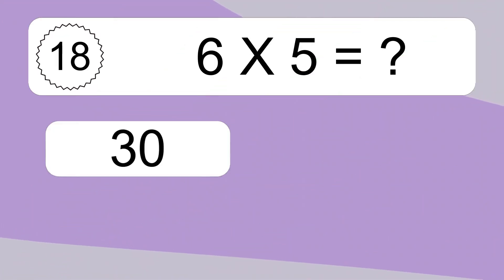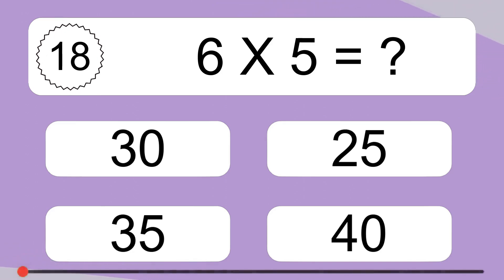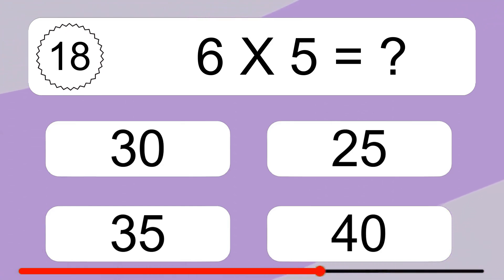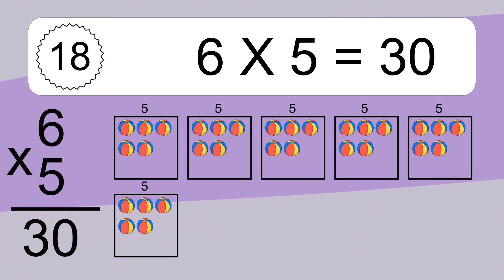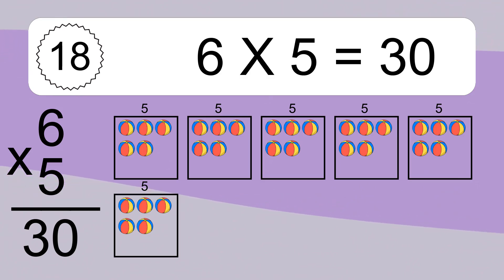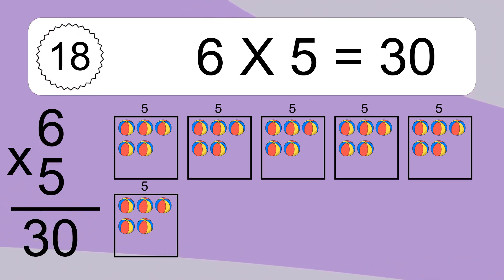6 times 5 equals what? 6 times 5 equals 30. We have 6 boxes, and each box has 5 colorful balls inside. If you count all the balls in all the boxes together, you will have 6 times 5 balls. This equals 30 balls.